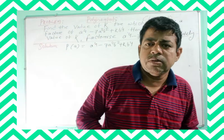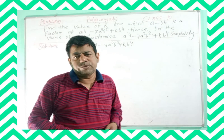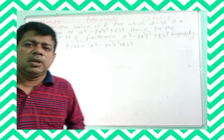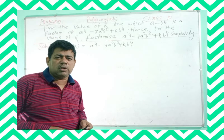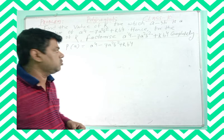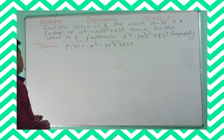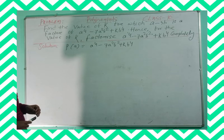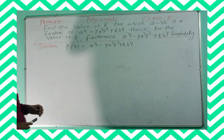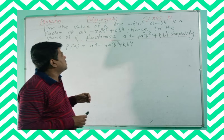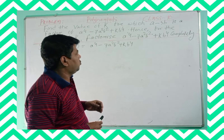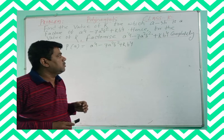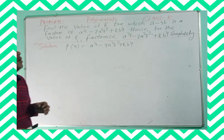Good evening students. Once again, an interesting and vital class for you. I am going to discuss Class 10 Mathematics, Chapter Preliminaries. As per your request and your doubt, I am going to discuss one of the vital questions. The question is: find the value of k for which a minus 3b is a factor of a to the power 4 minus 7a squared b squared plus k b to the power 4. Hence, for that value of k, factorize completely.